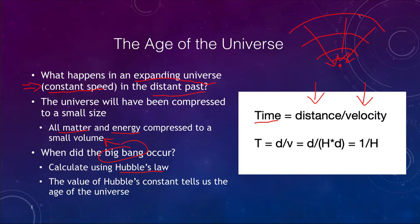We can do the same thing with the universe. Time equals distance divided by velocity, but we know from Hubble's law that velocity equals Hubble's constant times the distance.